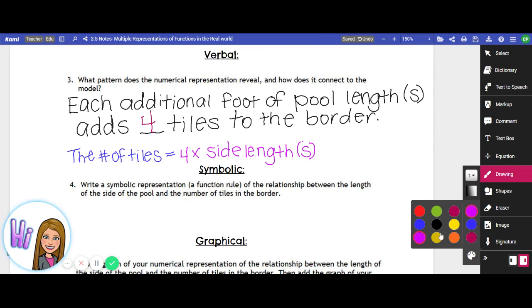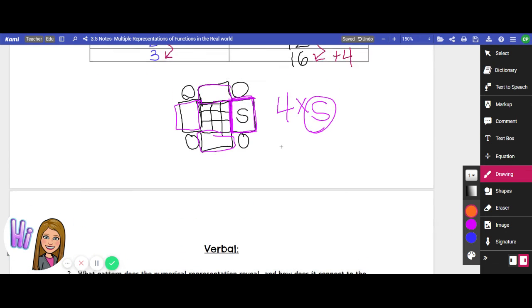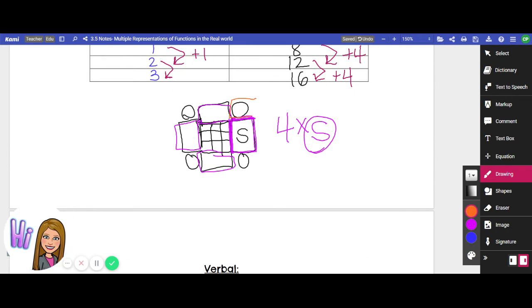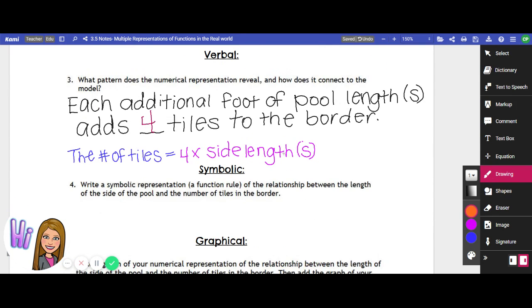And then we also have to go back and we have to add in those four corner tiles. So each time, no matter how small or big our border gets, is that four number ever going to change? And the answer is no. So it would just be a positive four because you're always going to have to add in those corners. So I would say plus four corner tiles.